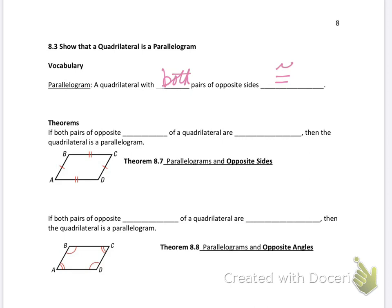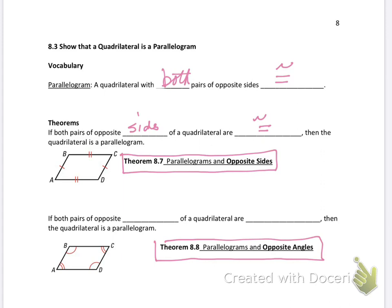Here are the theorems. Theorem 8.7: If both pairs of opposite sides of a quadrilateral are congruent, then the quadrilateral is a parallelogram. Theorem 8.8: If both pairs of opposite angles of a quadrilateral are congruent, then the quadrilateral is a parallelogram. You need both sets of angles or both sets of sides being congruent.